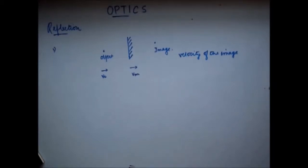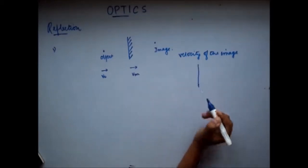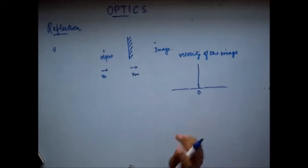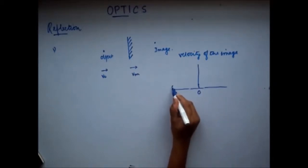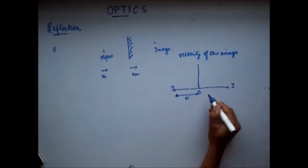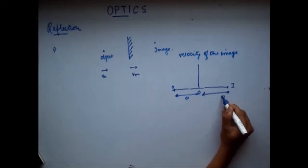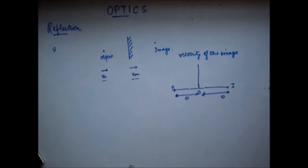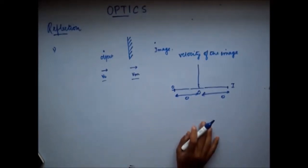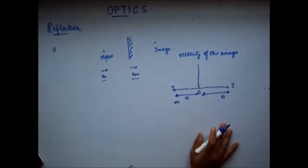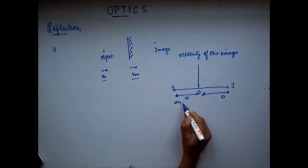The first traditional approach: this is the initial position of the mirror, the object is here, this distance is o, and the image will be formed at the same distance o on the other side. Since the mirror and the object start moving with velocities vm and v0 respectively, let's say the object moves a small distance dO, so this distance now becomes o minus dO.